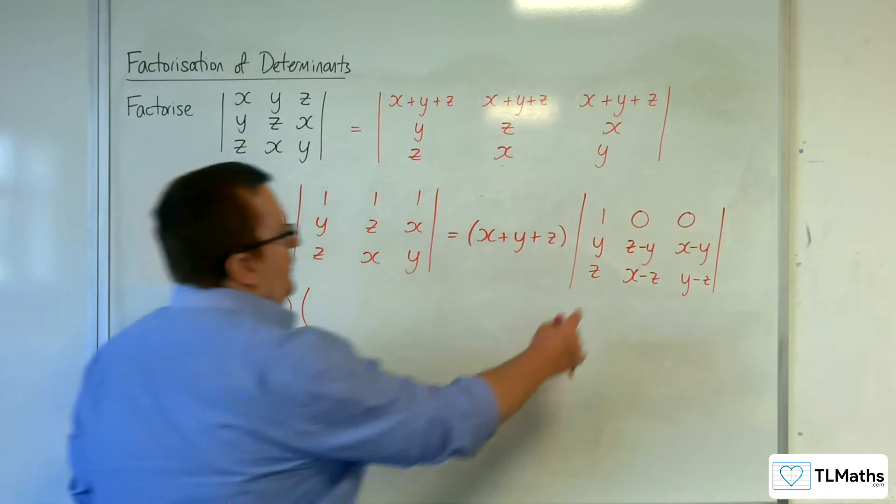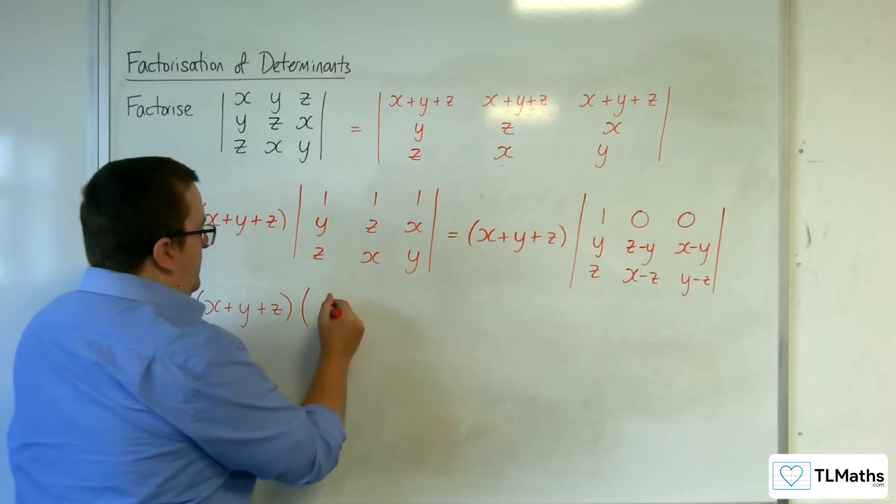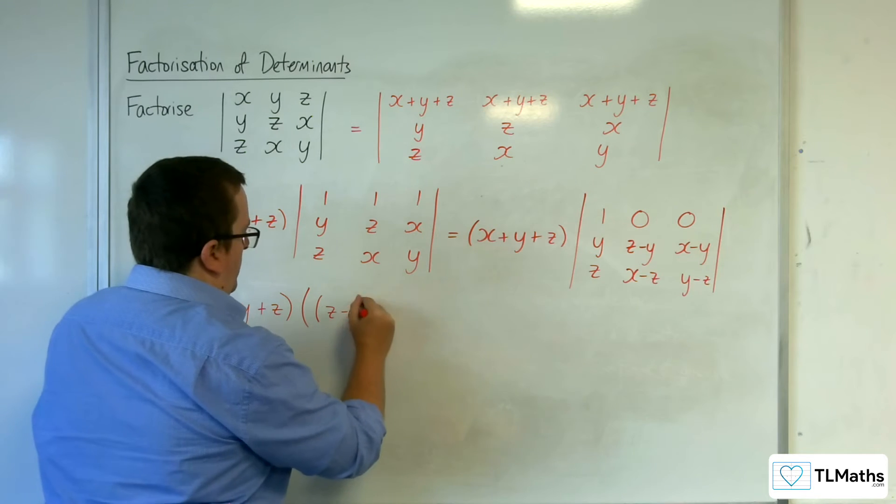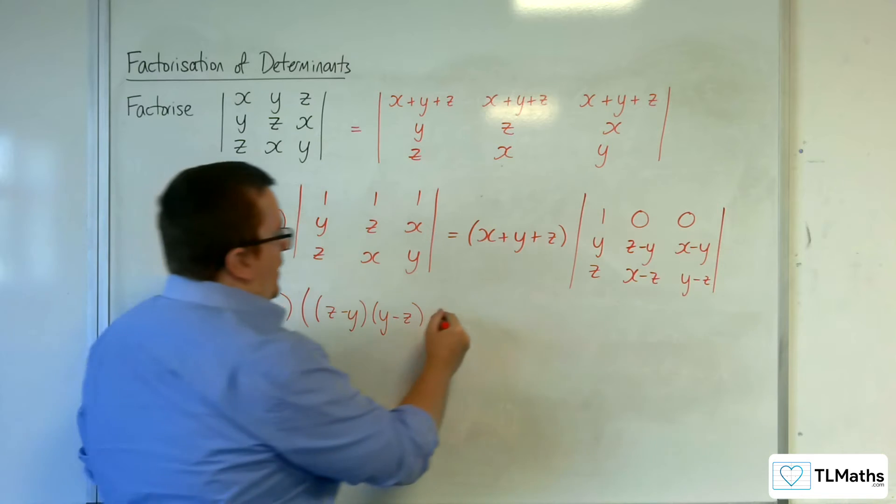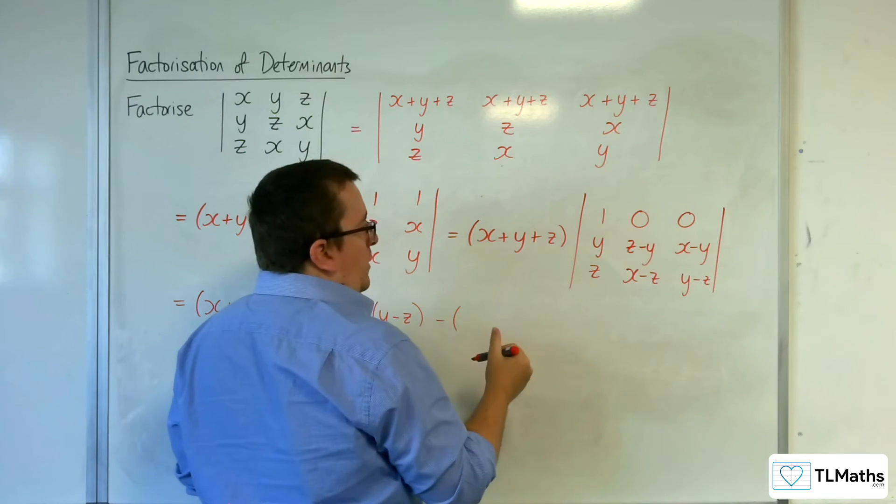Then all I need to consider is 1 times the determinant of this smaller matrix inside. So I've got z take away y times y take away z take away x take away y times x take away z.